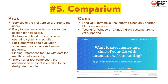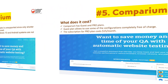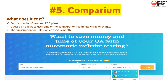Pros of Comparium: many services of the first version are free; easy to use with a how-to section for new users; simulated runs on Windows 7, Mac OS, and Linux in parallel; simultaneous web page evaluation on various browser platforms; a 'finding differences' feature with detailed results; and automatic screenshots emailed to designated recipients. Cons: only shorter URLs are supported, and Windows 10 and Android testing are not yet available. The guest plan is completely free; the pro plan costs $15/month.